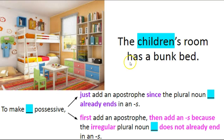Now we're back to the word 'children.' Let's see what we remember. The sentence says 'the children's room has a bunk bed.' To make 'children' possessive, first add an apostrophe and then an s, because the irregular plural noun 'children' does not already end in an s.